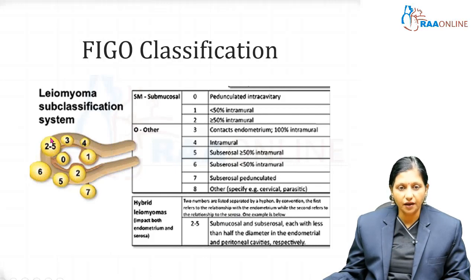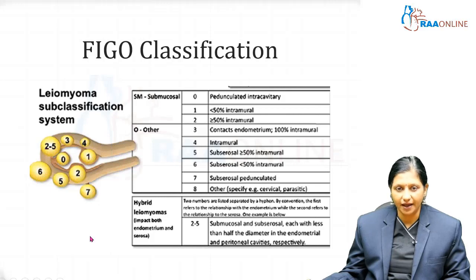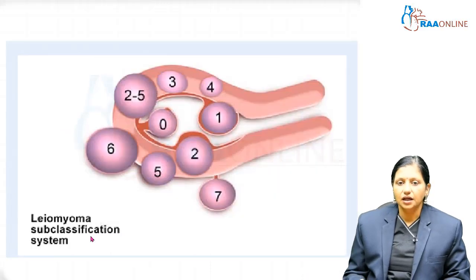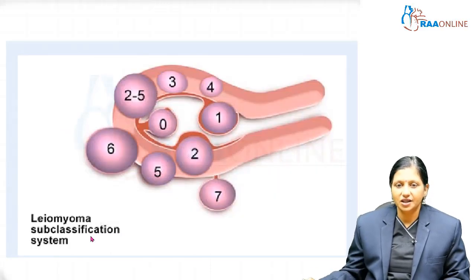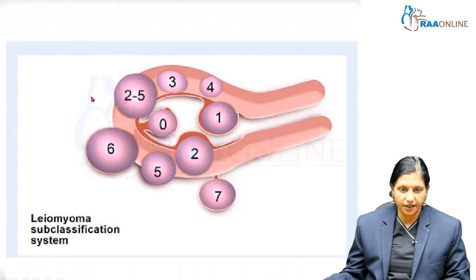One fibroid can have two numbers separated by a hyphen — this is the leiomyoma subclassification system. By convention, the first number refers to the relationship with the endometrium and the second number refers to the relationship with the serosa. For example, a myoma classified as 2-5 means type 2 is the endometrial grade and type 5 is the serosal relationship grade.